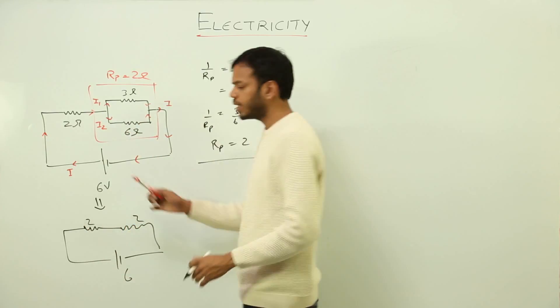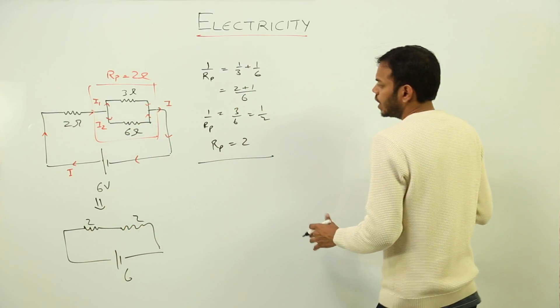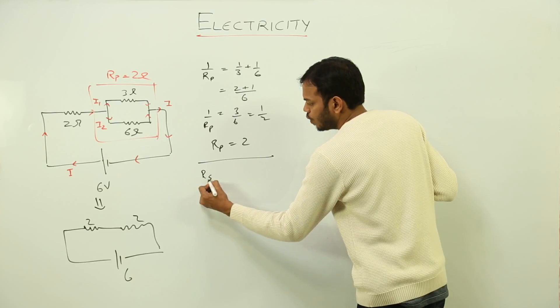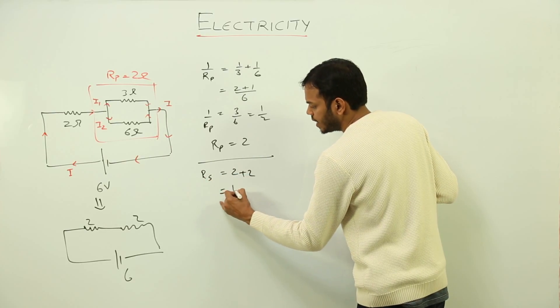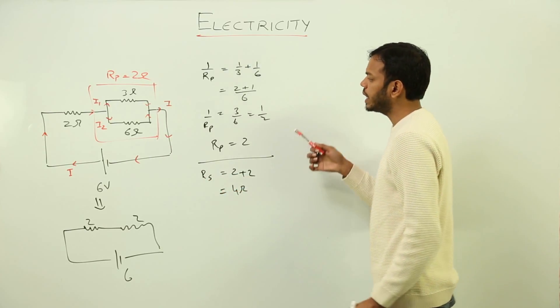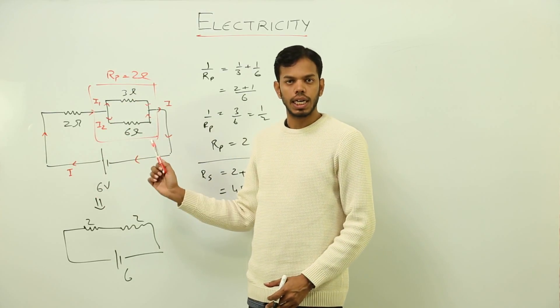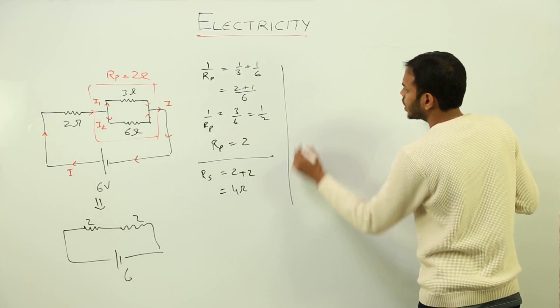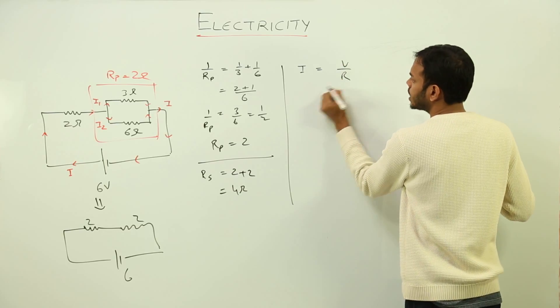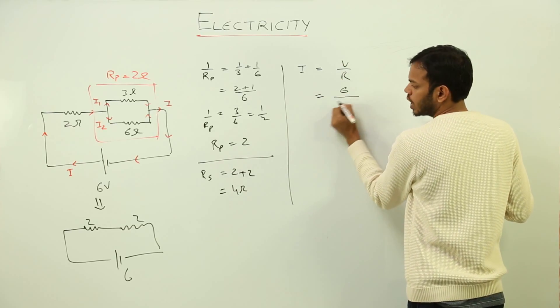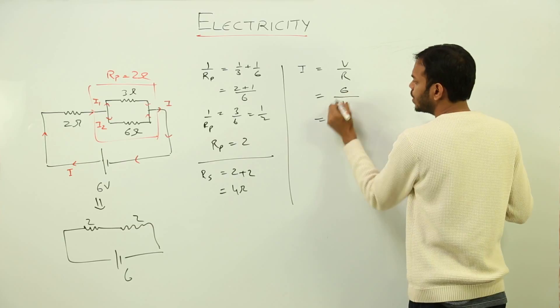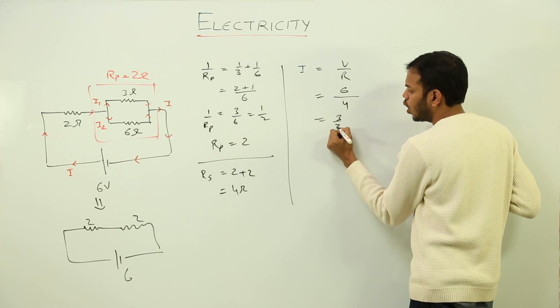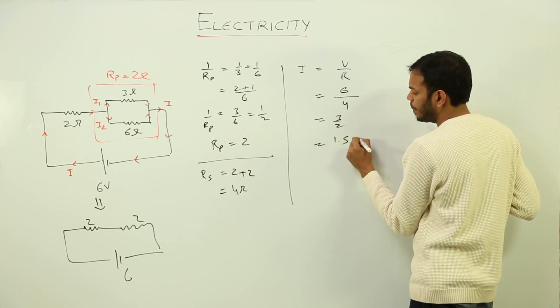This is what I was saying. So resistance in series would be 2 plus 2, that is 4 ohms. So 4 ohms is the total resistance of the circuit. So total current would be total voltage upon total resistance. Total voltage is 6, total resistance is 4. That gives me 3 upon 2, or 1.5 amperes.